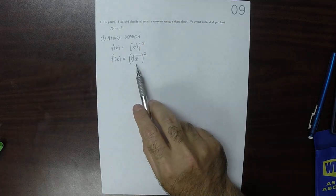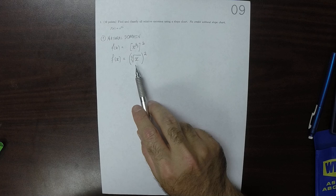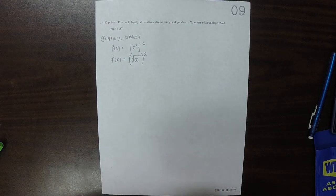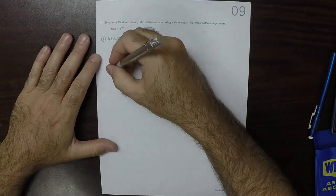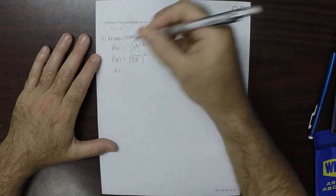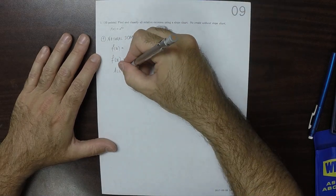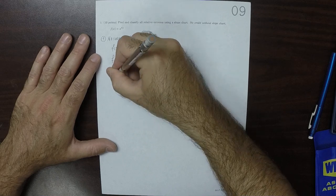Well, the cube root of x, its natural domain is all reals, and the squaring function, its natural domain is all reals, so this natural domain is therefore all x, so that there's no breaks.